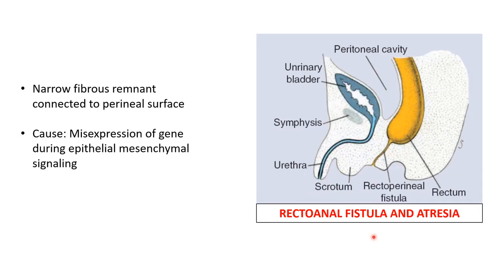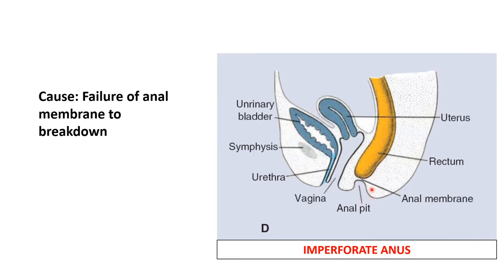Another condition is rectoal fistula and atresia — a narrow fibrous remnant connected to the perineal surface, caused by mis-expression of genes during epithelial-mesenchymal signaling. Imperforate anus results from failure of the anal membrane to break down; when the cloacal membrane derivative does not rupture, there is no communication of the anal canal with the exterior.